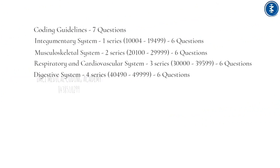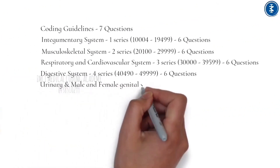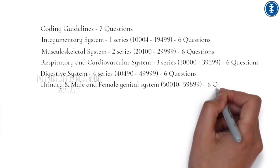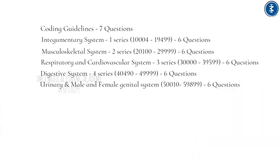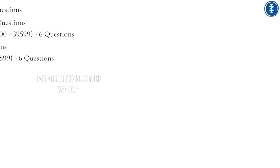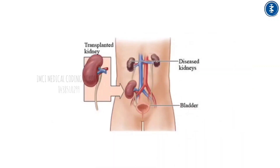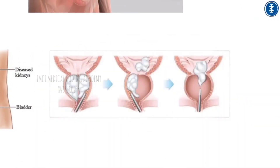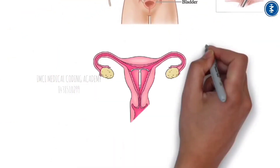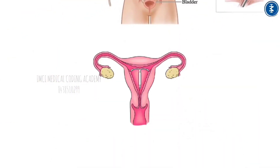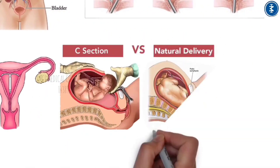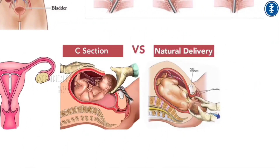The Urinary System and Male and Female Genital chapters (Chapter 5, codes 50010–59899) contribute 6 questions. This chapter covers physician surgeries of the kidney, ureter, bladder, and urethra, including renal transplantation, transurethral resection of the prostate (TURP), IUD placement and removal, pregnancy delivery, and abortion surgery.